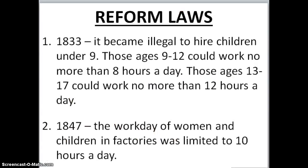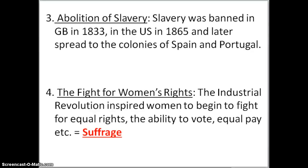Some reform laws you need to be familiar with. In 1833, it became illegal to hire children under the age of 9. Kids ages 9 through 12 could work no more than 8 hours a day, and kids ages 13 through 17 could work no more than 12 hours a day. In 1847, the workday of women and children in factories was finally limited to 10 hours a day. Slavery was banned in Great Britain in 1833 and in the United States in 1865.